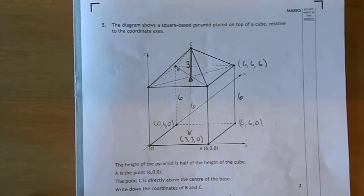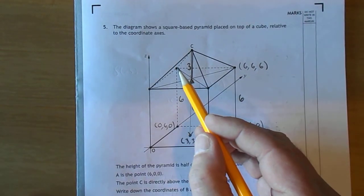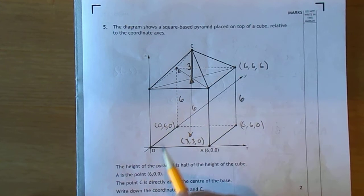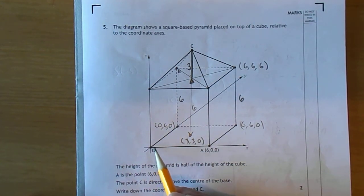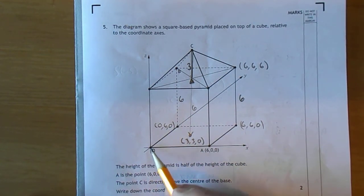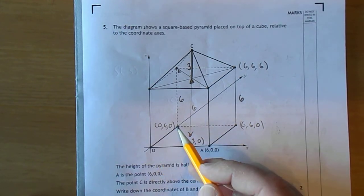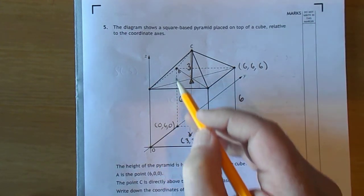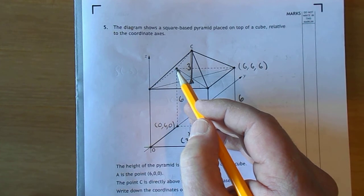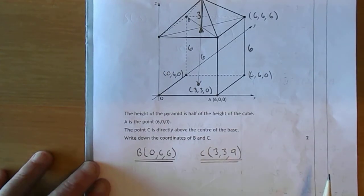Let's get the coordinates of B. Where's B? There it is there. So how do you get from the origin to B? Well, you don't go along the X. So 0 along the X. 6 along the Y. And 6 up on the Z. So B is 0, 6, 6.